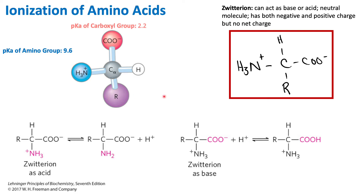A term we must be familiar with when talking about ionization and amino acids is zwitterion. A zwitterion is a molecule that has both a positive charge and a negative charge — plus one and minus one cancel each other out to give zero, so it is a neutral molecule. A zwitterion has a positive and a negative charge that cancel out, and it is able to act as an acid or a base.